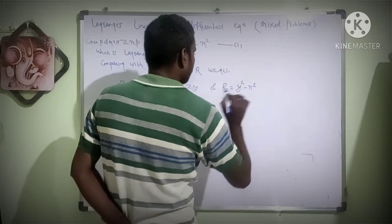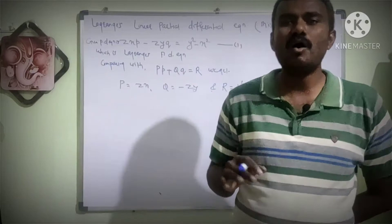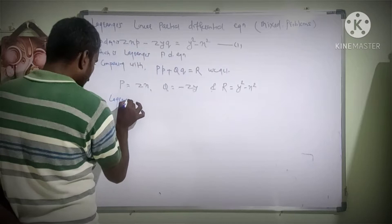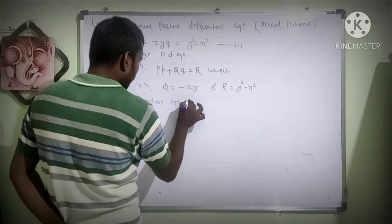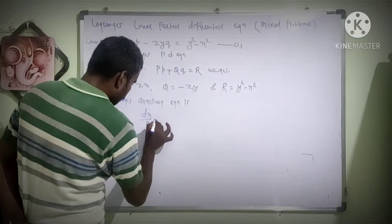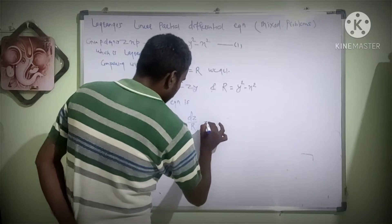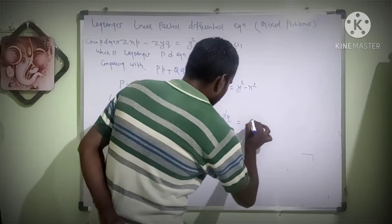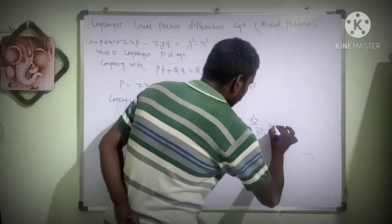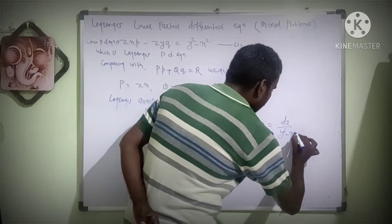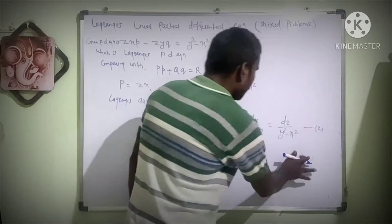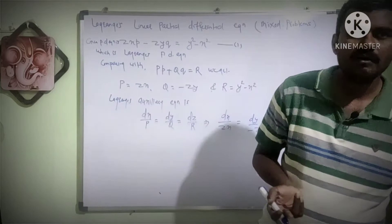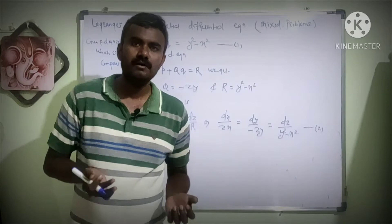In the second step, we write Lagrange's auxiliary equation. Lagrange's auxiliary equation is: dx by P equal to dy by Q equal to dz by R. Putting the values of P, Q, and R, we get: dx upon zx equal to dy upon minus zy equal to dz upon y square minus x square. We call this equation number 2. Using this auxiliary equation, we have to find two solutions — first we try the grouping method.